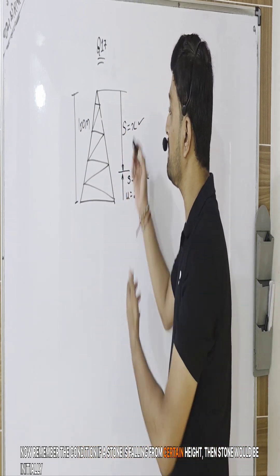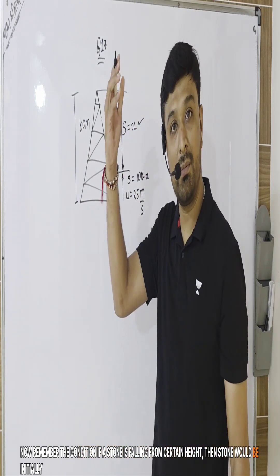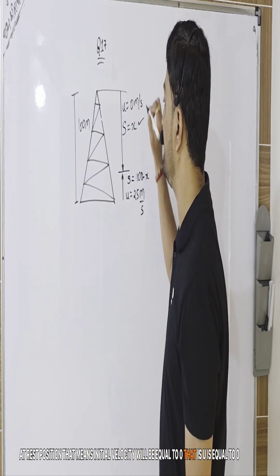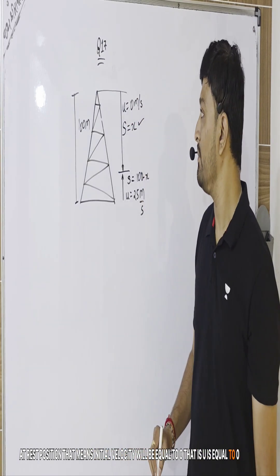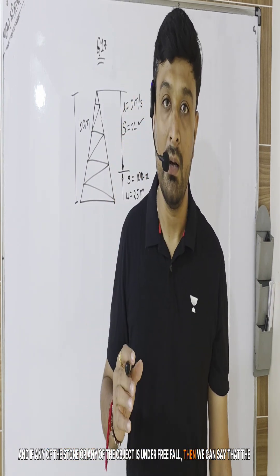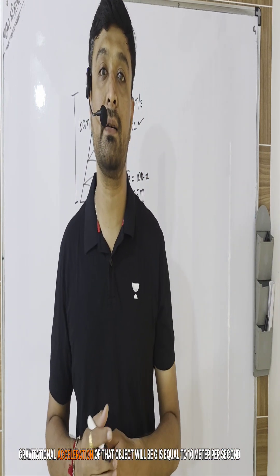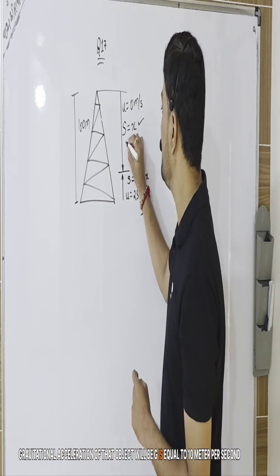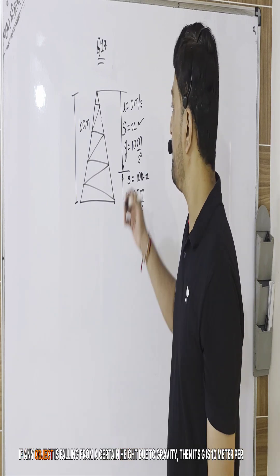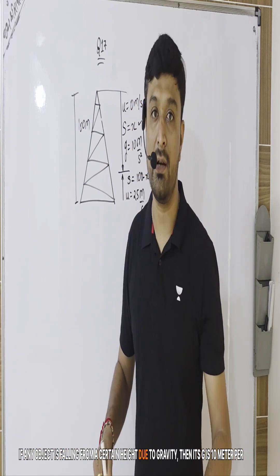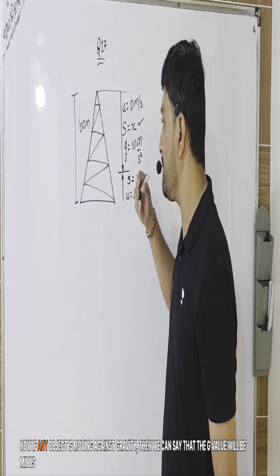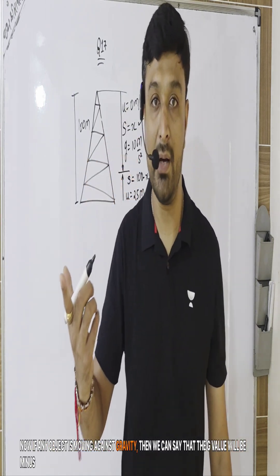Now remember the condition: if a stone is falling from certain height, the stone would be initially at rest position, that means initial velocity u will be equal to zero. If any object is under free fall, then we can say that the gravitational acceleration g is equal to 10 meter per second square. If any object is moving against gravity, then the g value will be minus 10 meter per second square.